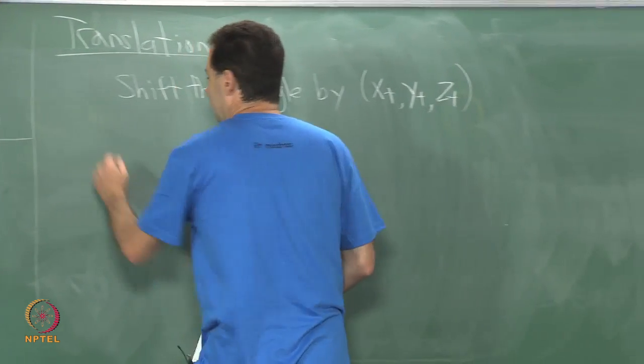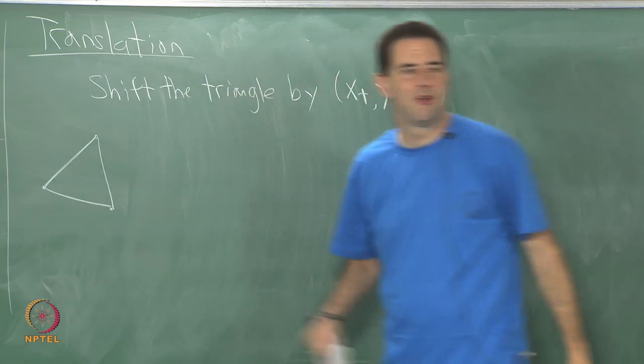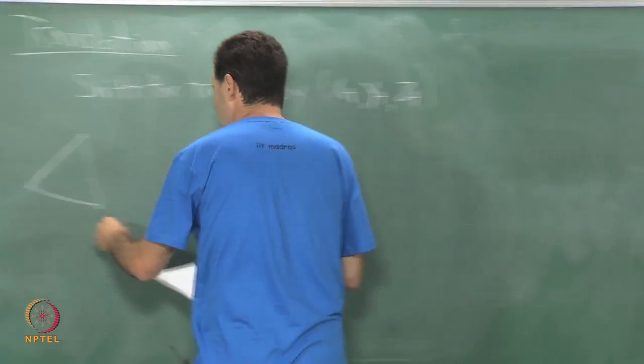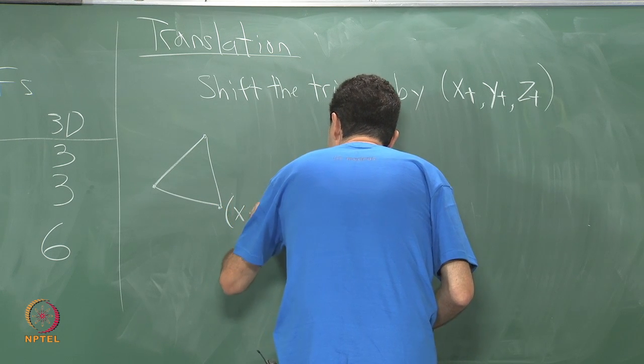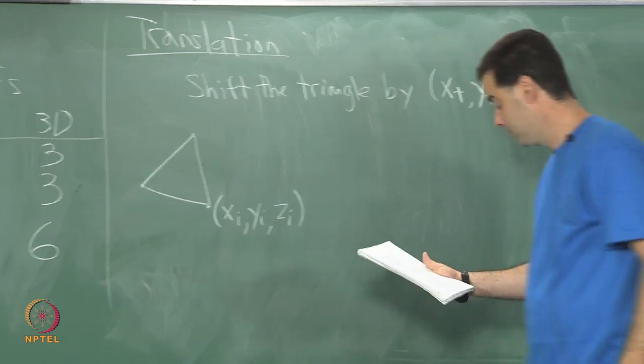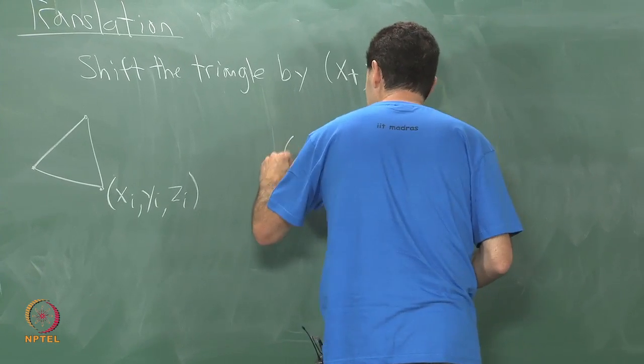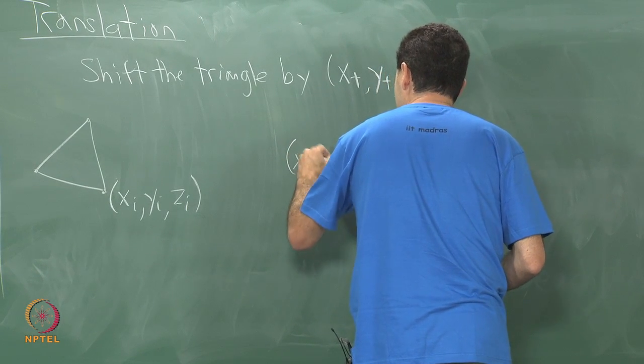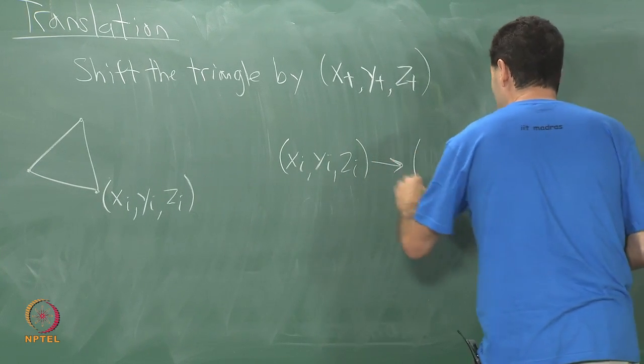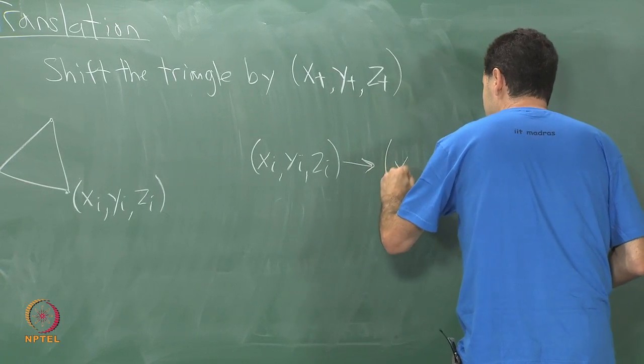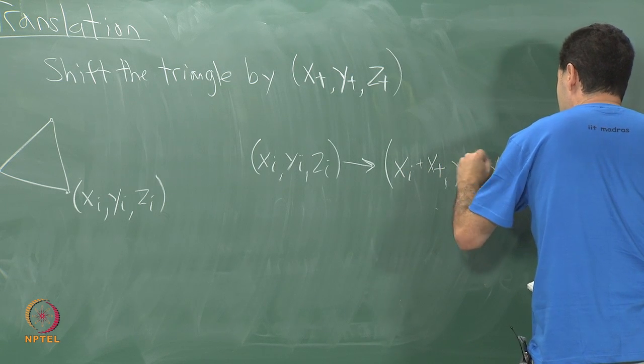We want to shift it by some amount. We just take the coordinates of the triangle. I do not think I want to write out all three coordinates. Let us just pick one of the coordinates here and we will call it x_i, y_i, z_i. If we want to take this point and translate it, then we just apply the following transformation: we take x_i, y_i, z_i and transform it to x_i plus x_t, y_i plus y_t.